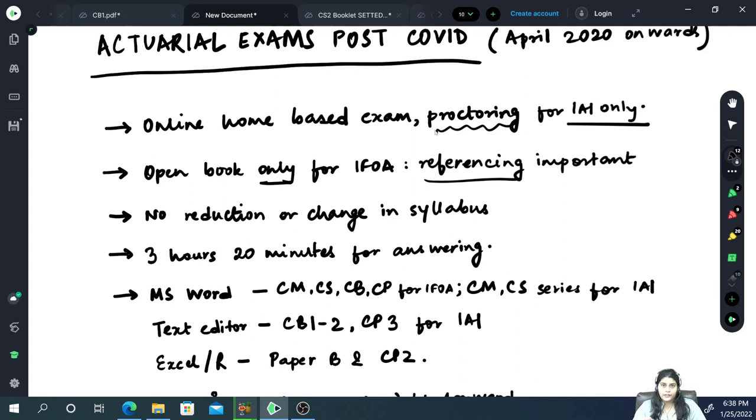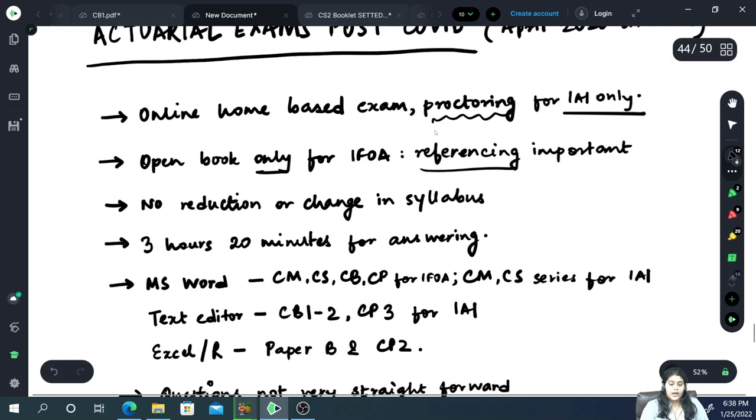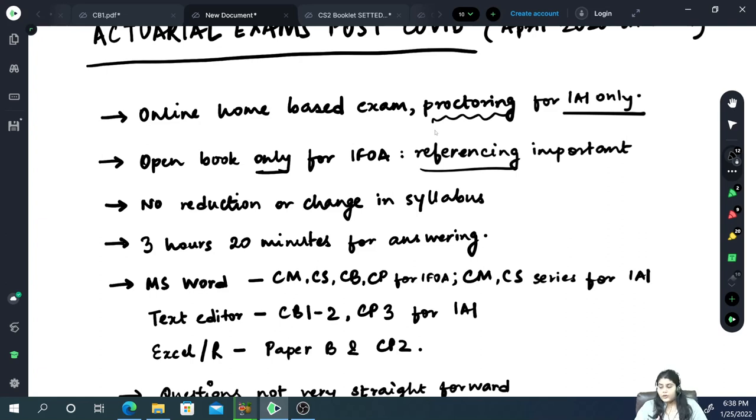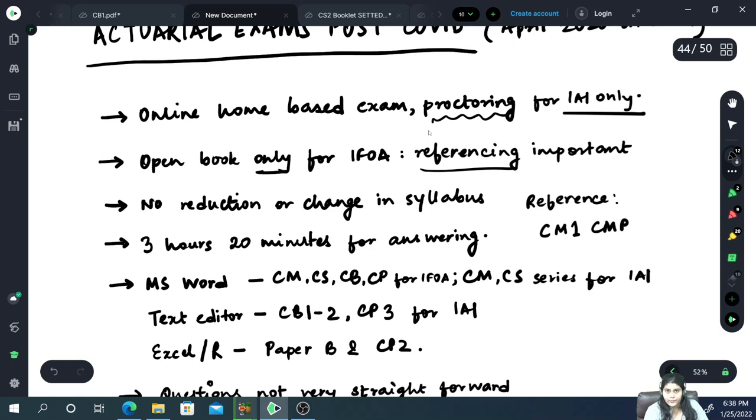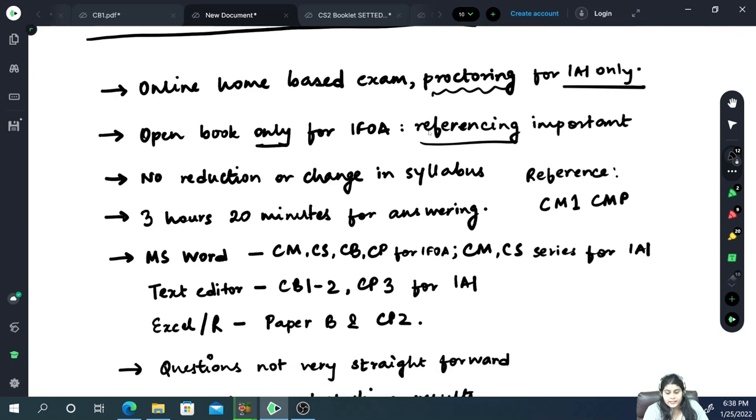We have a different video on the referencing for IFOA and IAI students. However, just to remind you all, referencing is when you are referring to the book for let's say an answer or a formula. Even if it is for a formula, if you are referring to the tables book even, here you have to mention in your answer script that this has been taken or you can just write reference. And then you have to write the subject name of course, let's say CM1. Where you are taking the reference from, let's say we are taking it from the study material published by ACTED, CMP 2019 edition. The chapter number and the page number.